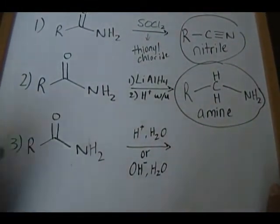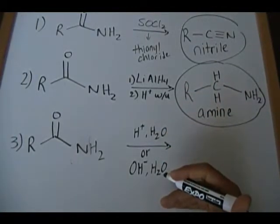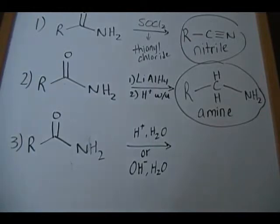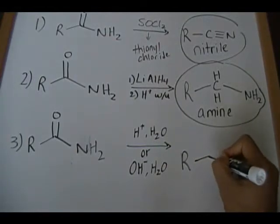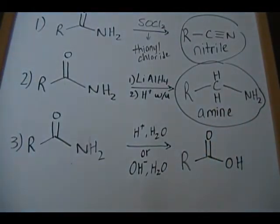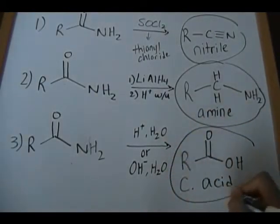In the third and final reaction, you have an amide — again there's no specification that it has to be any particular type — reacting under acidic or basic conditions with water present. This reaction generates a carboxylic acid. It's very straightforward: replace the NH₂ with an OH group and your product is the carboxylic acid.